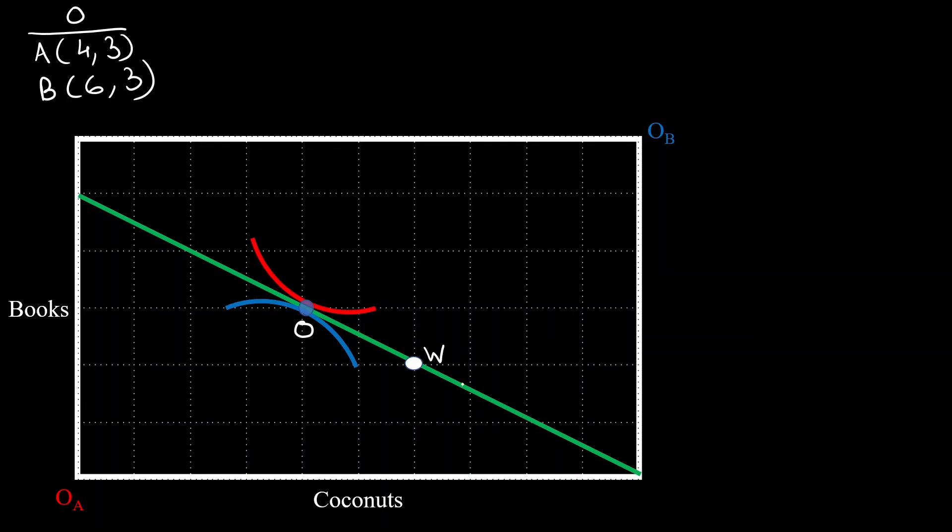What about this case? The optimal for A and B can be represented by a single point as both the indifference curves are tangential to the same point on the budget line. That means the indifference curves are tangential to each other as well. Again let's check this in terms of coconuts. A initially has six coconuts and now A only wants four coconuts. So A is willing to sell two of them. B initially had four coconuts and now B wants six which is exactly what A is selling.